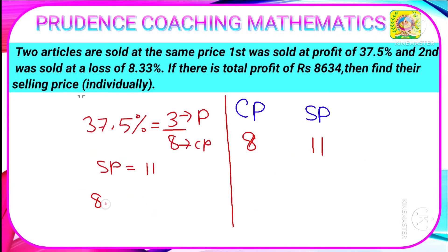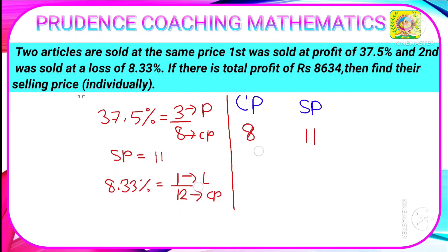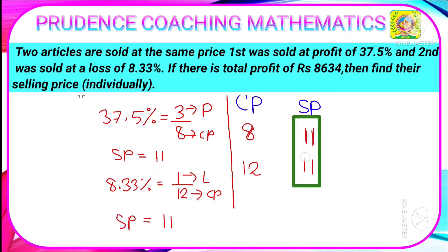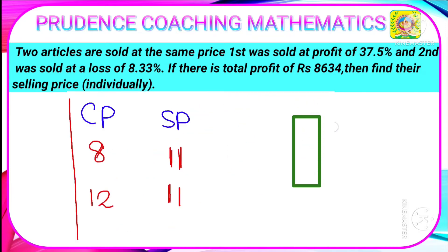The second article was sold at a loss of 8.33%, which in ratio equals 1/12. So if CP is 12, the loss is 1 unit, giving SP = CP minus loss = 12 minus 1 = 11 units. In the second case, CP is 12 and SP is 11. As you can see, the SP is the same in both cases — 11 units in both.